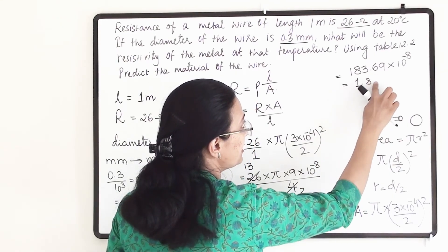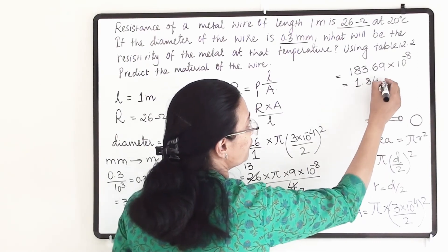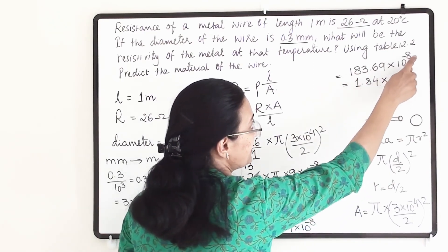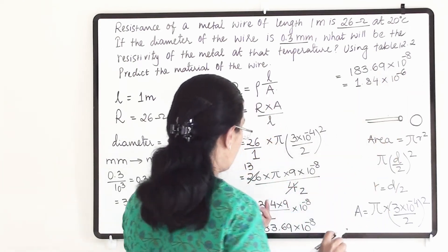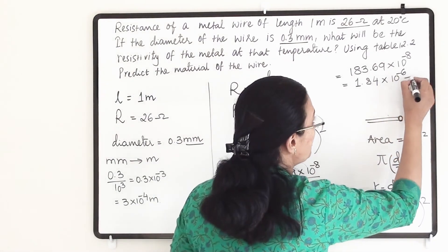So 1.84 into 10 raise to minus 6, since I shifted the decimal point, and this is our resistivity. The unit will be ohm meter.